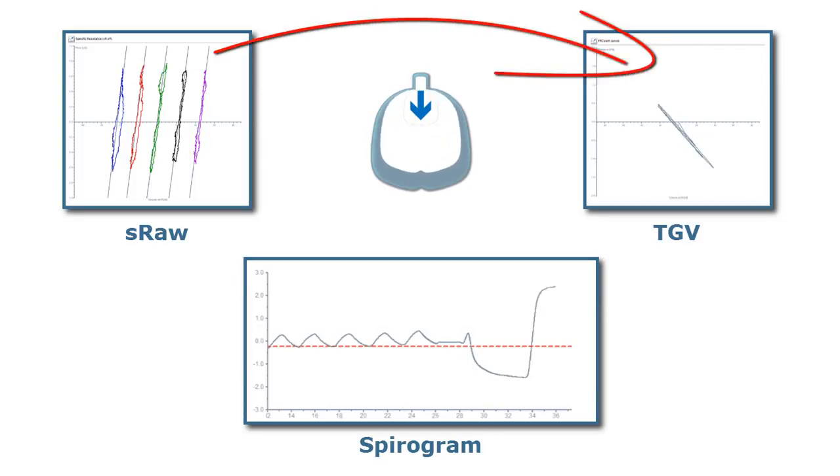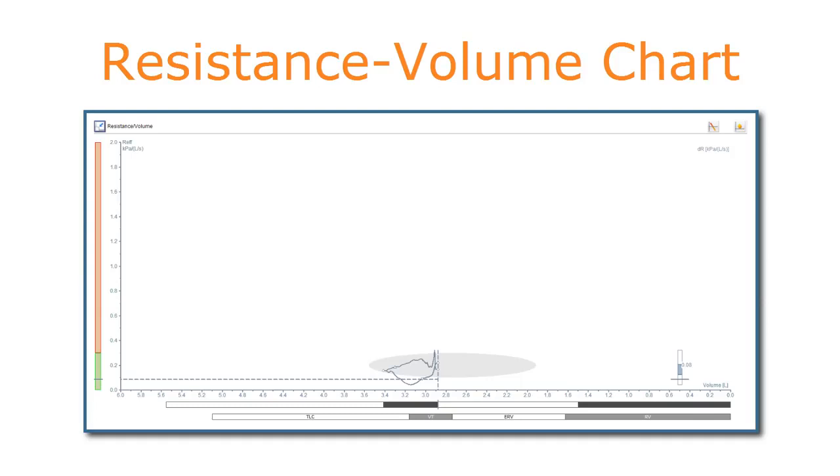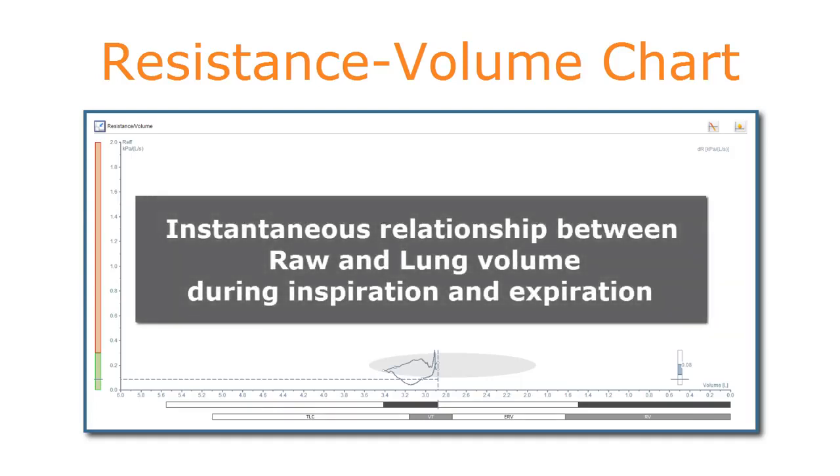It is well known that there is a relationship between airway resistance and lung volumes. However, none of the charts that are currently available embrace both airway resistance and lung volume. That's why SentrySuite is offering you the resistance-volume chart: a presentation of the instantaneous relationship between airway resistance and lung volume across the entire breathing cycle.